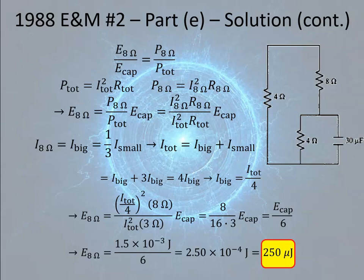They awarded four points for Part E: one point for determining the correct equivalent circuit and three points for setting up and solving the ratio method. An alternate solution was also given: one point for the correct equivalent circuit, one point for using an integral for the current, and two points for successfully completing the calculation. If you can use the ratio method to solve a problem — especially one that would otherwise require calculus — it's highly recommended. If you have any questions, please let me know in the comments. Thank you for watching.